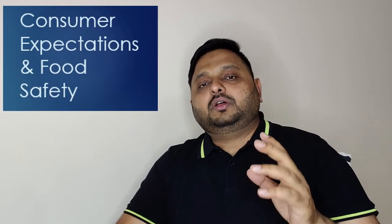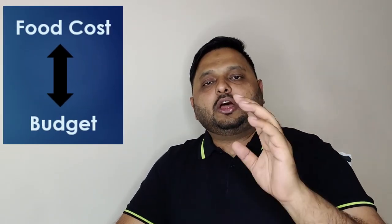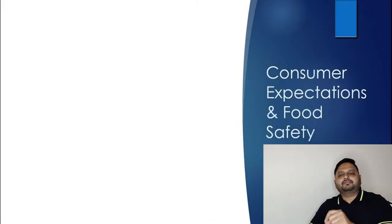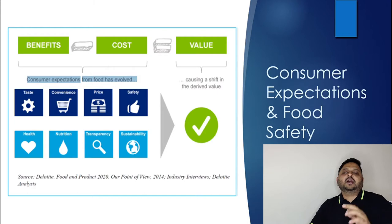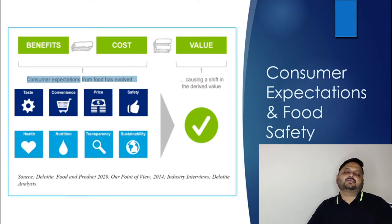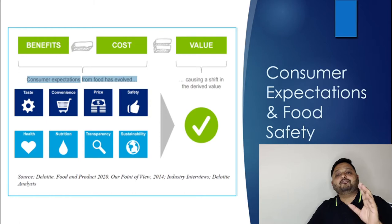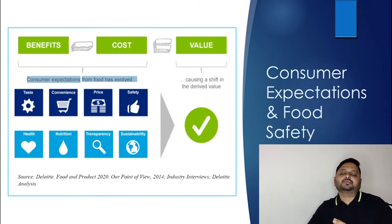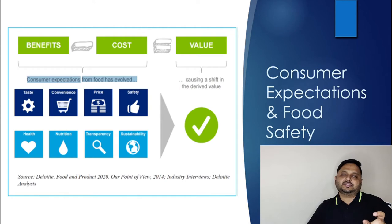Let's talk about consumer expectations and food safety. In earlier days, the basic consumer expectation about food was that it should match their budget. But now that is changing. People are looking at many different variables before finalizing the value of food. As you can see on this slide, benefits and costs are multiple — taste, convenience, price, and safety — along with health, nutrition, transparency, and sustainability. A well-informed customer compiles all this information to make a decision about their food choices. It has to be a combination of cost and benefit analysis.